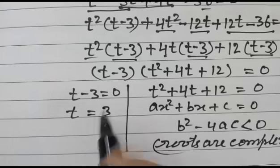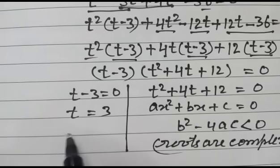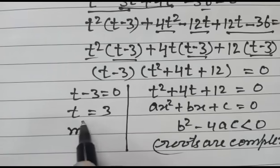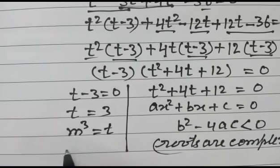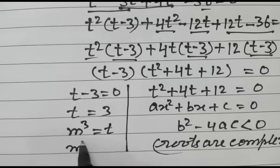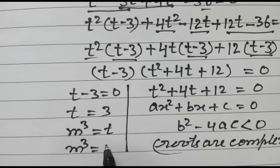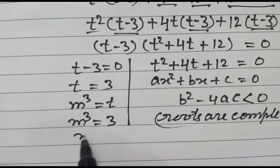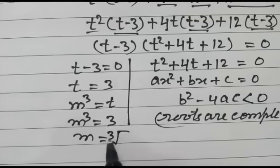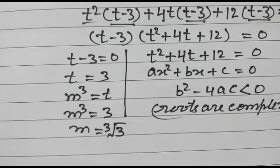As we assumed, m to the power 3 is equal to t. So m to the power 3 is equal to 3, which means m is equal to the cubic root of 3.